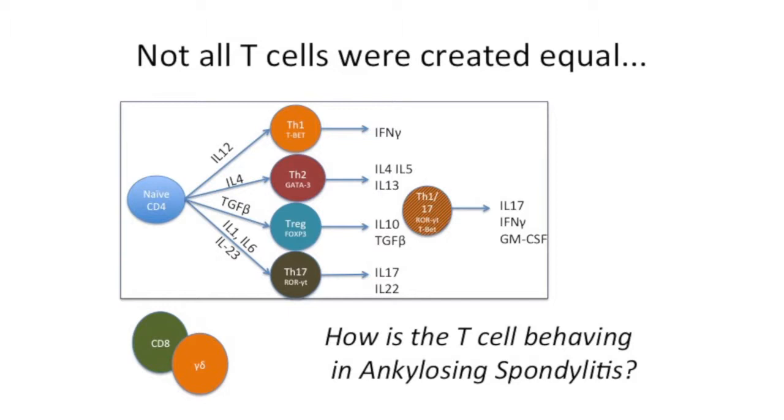So it's quite a simple question we're asking: how is the T cell behaving in ankylosing spondylitis? Because all the genetics is pointing there. Functionally, how is it behaving? What molecules is it making? And we do this with a flow cytometry approach.